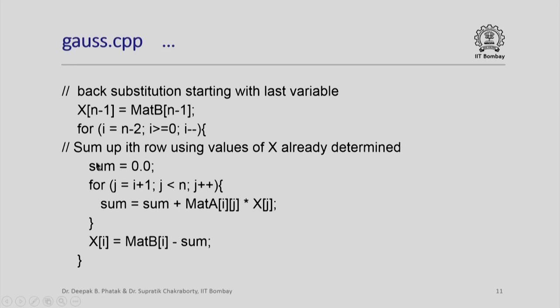What we do? Essentially, we sum up the i th row using values of x which we already determined. We start with sum equal to 0 and for i plus 1 up to n minus 1, we calculate mat A[i][j] into x[j] into the cumulative sum. Notice that all these x[j]'s have already been determined previously because j starts only with i plus 1. Having done this, I simply calculate i th element of x as mat B[i] minus sum. And when I do that for all values of i, I would have actually solved the system.